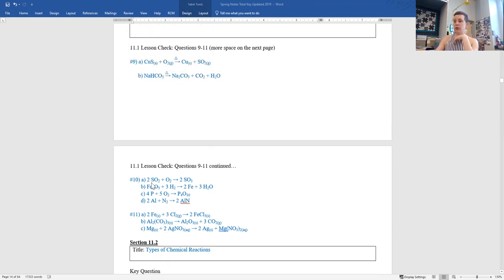Number 10, we have 2SO2 plus O2 gives you 2SO3. Part B: Fe2O3 plus 3H2 gives you 2Fe plus 3H2O. Part C: 4 phosphorus plus 5O2 gives you P4O10. And part D: 2Al plus N2 gives you 2AlN. And then number 11A is 2Fe solid plus 3Cl2 gas gives you 2FeCl3 solid. Part B: Al2(CO3)3 solid breaks down into Al2O3 solid and 3CO2 gas. And the last one, C: magnesium Mg solid plus 2AgNO3 aqueous gives you 2Ag solid plus Mg(NO3)2 aqueous.